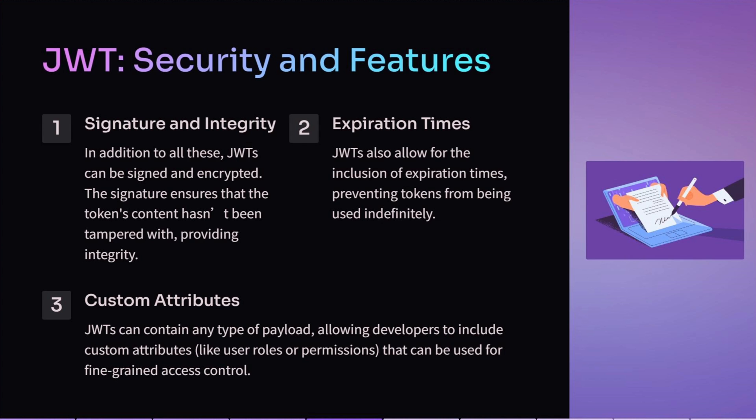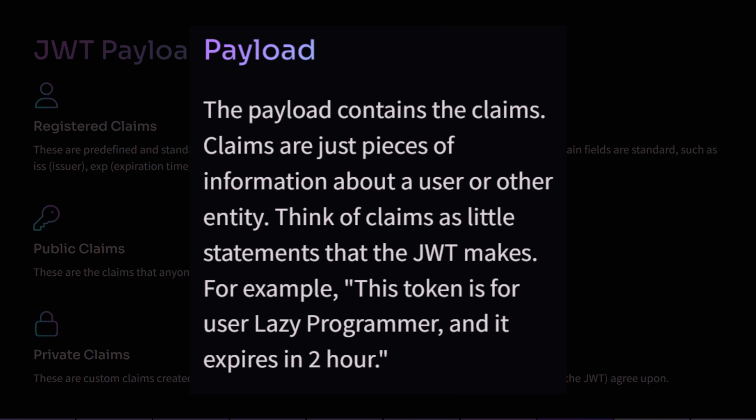The second part of JWT is the payload. The payload contains the claims. Claims are just pieces of information about a user or other entity. Think of claims as little statements that the JWT makes — for example, this token is for user 'lazy programmer' and it expires in two hours.